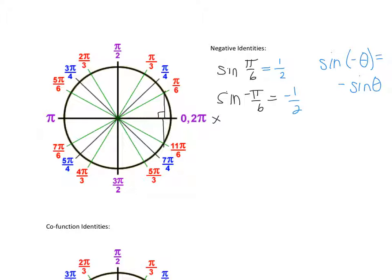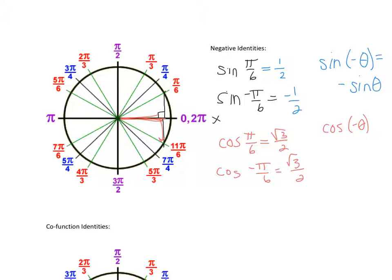Now the next one is cosine. If we have cosine of pi over 6, the x value is root 3 over 2. But even if we do the cosine of negative pi over 6 — going down pi over 6 — the x value is still the same, root 3 over 2. So the cosine negative identity is: the cosine of negative theta still equals the cosine of theta.